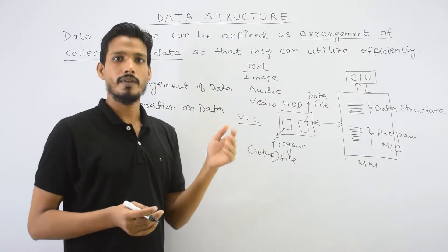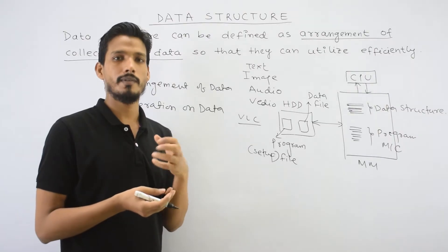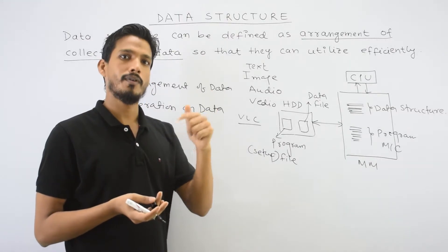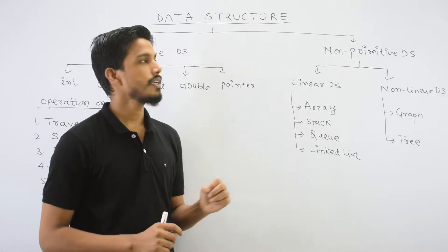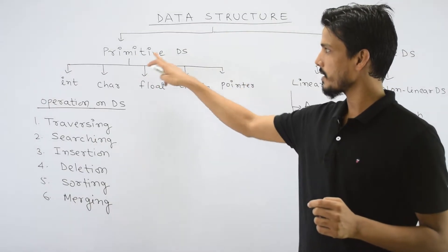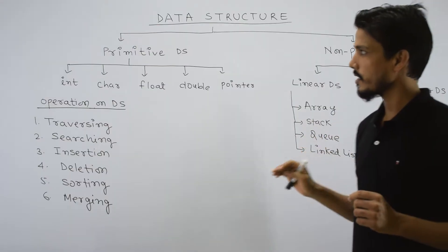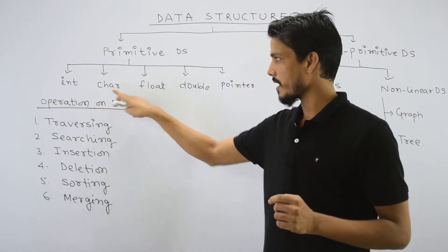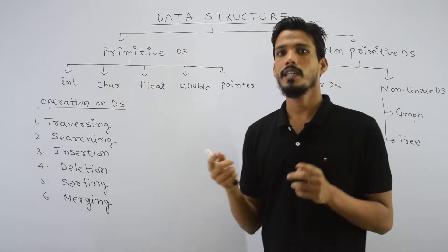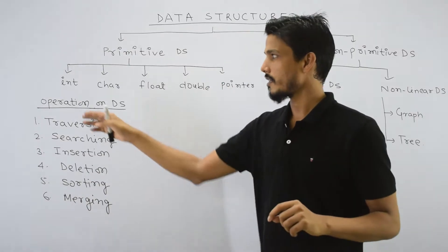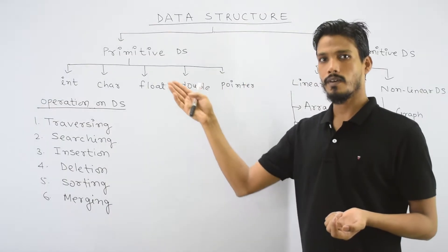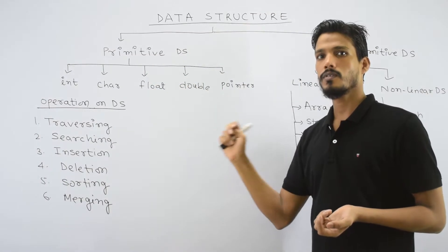Now we will discuss which data structures are in the syllabus — the types or classification of data structure. There are two types: primitive data structure and non-primitive data structure. Primitive data structures include integer, character, float, double, and pointer. Throughout this whole course, these will be used one by one. When you have an integer, it is 2-byte or 4-byte — it is your primitive data structure.